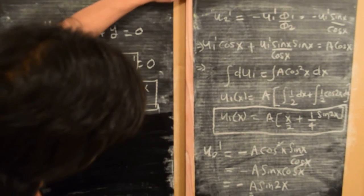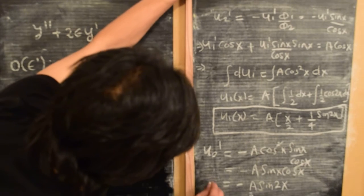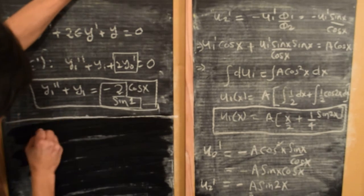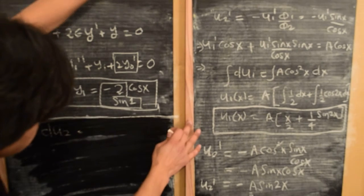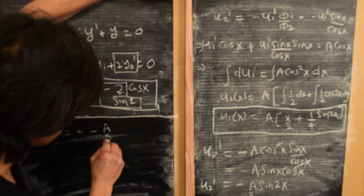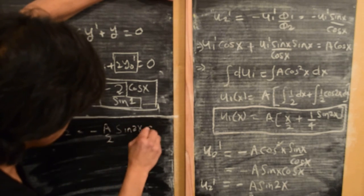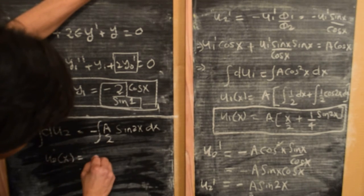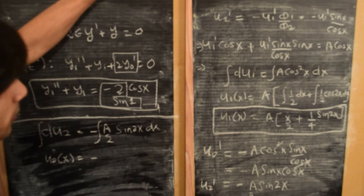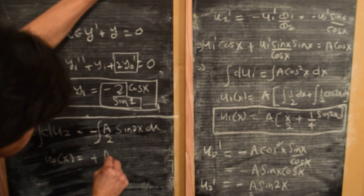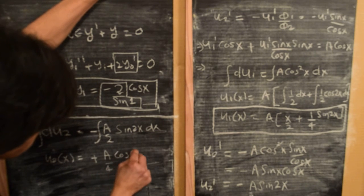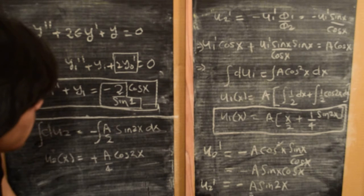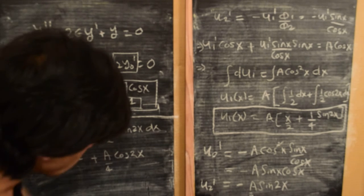We can integrate this equation for u₂ by separating variables. Integrating −(a/2)·sin(2x) dx, and since the integral of sin is −cos with a factor of 2 in the denominator, we get u₂(x) = (a/4)·cos(2x).